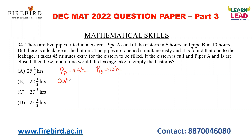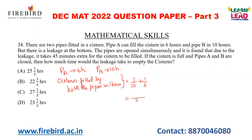Let us consider first what is the time taken. The cistern filled by both pipes in 1 hour is equal to 1/10 + 1/6. The LCM of 10 and 6 is 30. So 3 + 5 = 8, giving us 8/30. In 1 hour, both pipes will fill 8/30 parts of the cistern. Therefore, time taken by both pipes to fill the cistern completely is 30/8 hours.